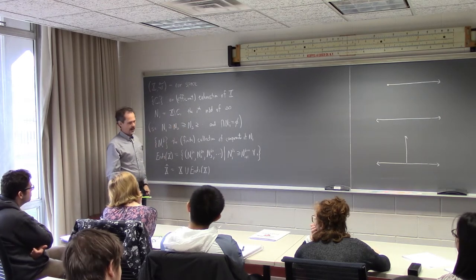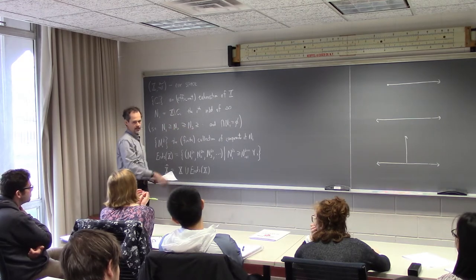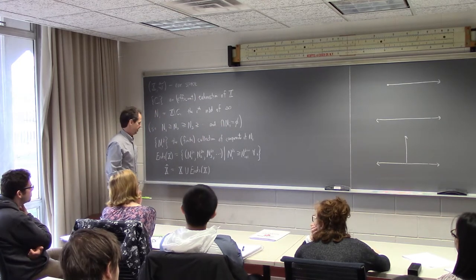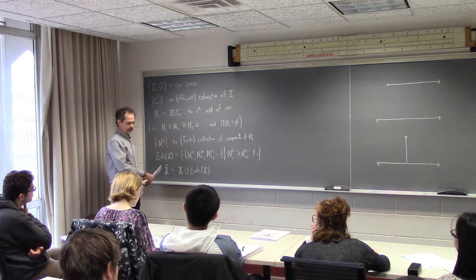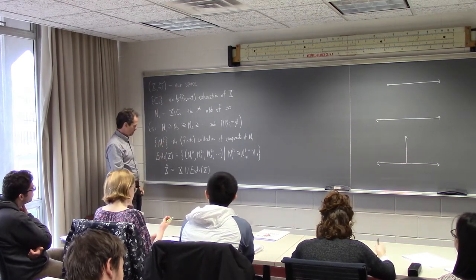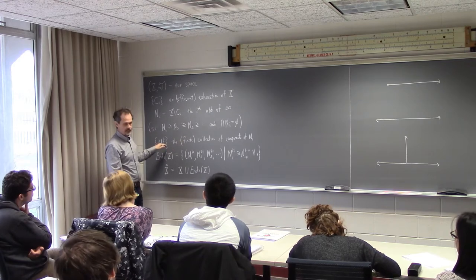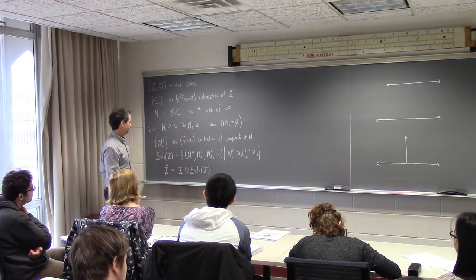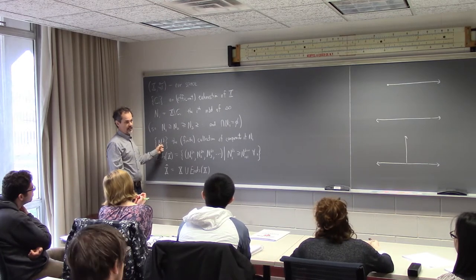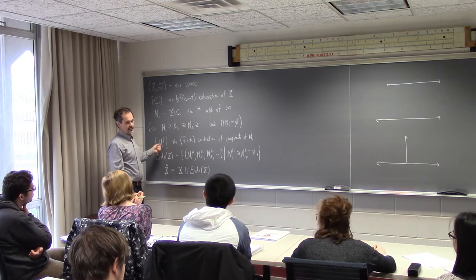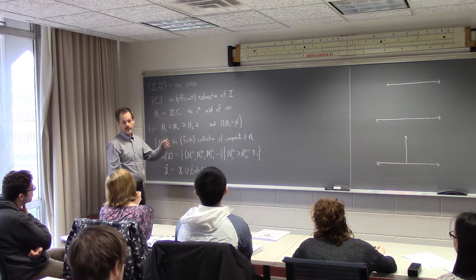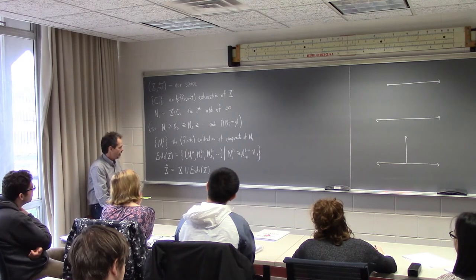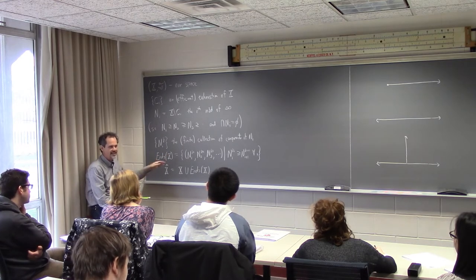We write our space X as a countable union of larger and larger compact sets. X must be a metric space that is locally compact, locally path connected, path connected, and has a countable basis — so this is always possible. The neighborhoods of infinity are the complements of those compact sets. As i gets bigger they get smaller, and since the compact sets fill up the entire space, the intersection of the neighborhoods of infinity is empty.